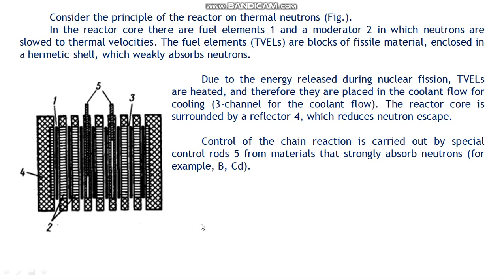Channel (3) is for the coolant flow. The reactor core is surrounded by reflector (4), which reduces neutron escape. Control of the chain reaction is carried out by special control rods (5) from materials that strongly absorb neutrons — for example, boron and cadmium. The parameters of the reactor are calculated so that when the rods are completely inserted, the reaction does not proceed. When the rods are gradually removed, the neutron multiplication constant increases and at some position assumes a value of 1.